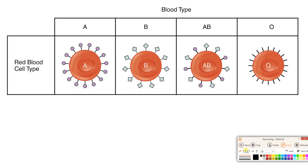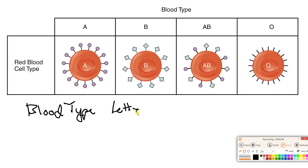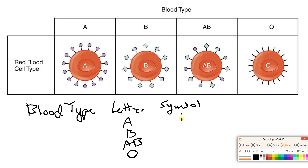So blood type — everybody's got a blood type, and you might know yours. Generally, we think of blood type in terms of a letter and a symbol, and those are actually two separate entities. There will always be a letter and there will be a symbol, and the two things actually have nothing to do with one another.